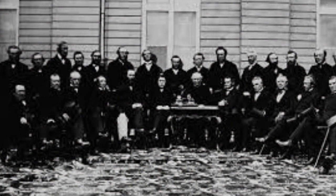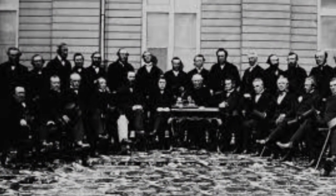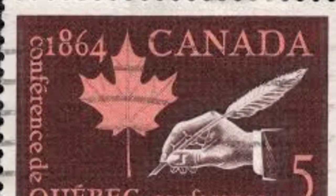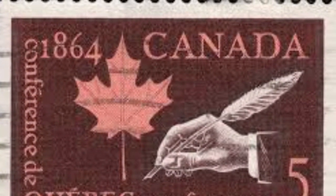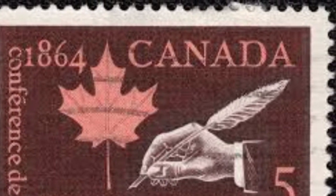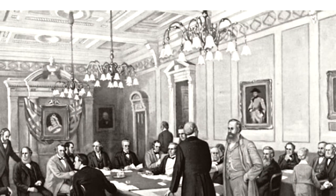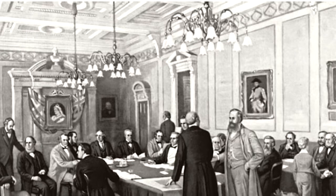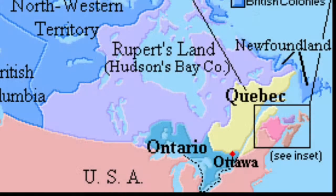The Quebec Conference of 1864 had delegates meet with representatives to develop plans for unification. The compromises at Quebec included a bicameral parliament — a House of Commons based on population and the Senate — and the split of Canada's Canada West and Canada East into Ontario and Quebec.